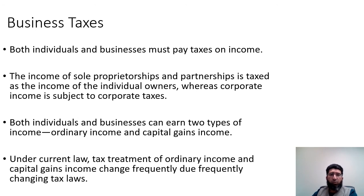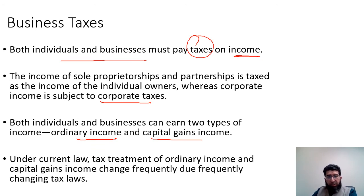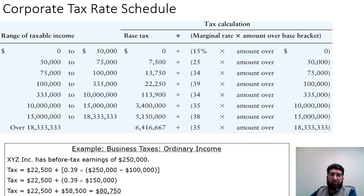All individuals and businesses must pay taxes on income. The income of sole proprietors and partnerships is taxed as the income of individual owners, whereas corporate income is subject to corporate taxes. There are two types of income: ordinary income and capital gains income. Under current US tax laws, the tax treatment of both types changes frequently due to changing tax laws, so one must stay updated on tax rates.